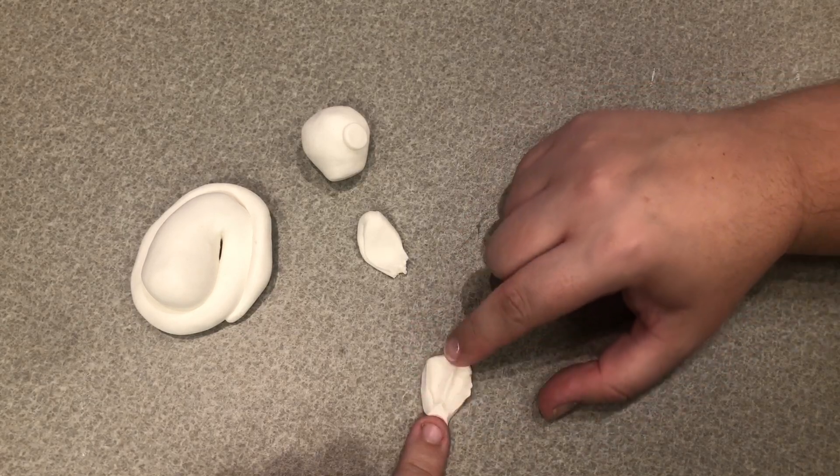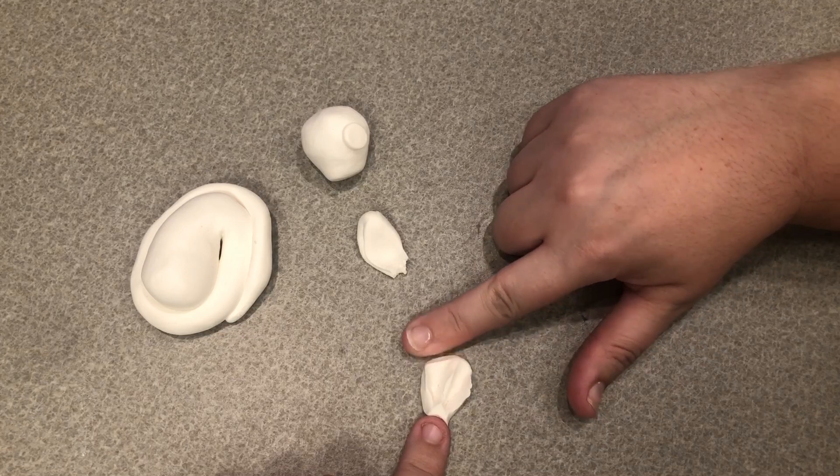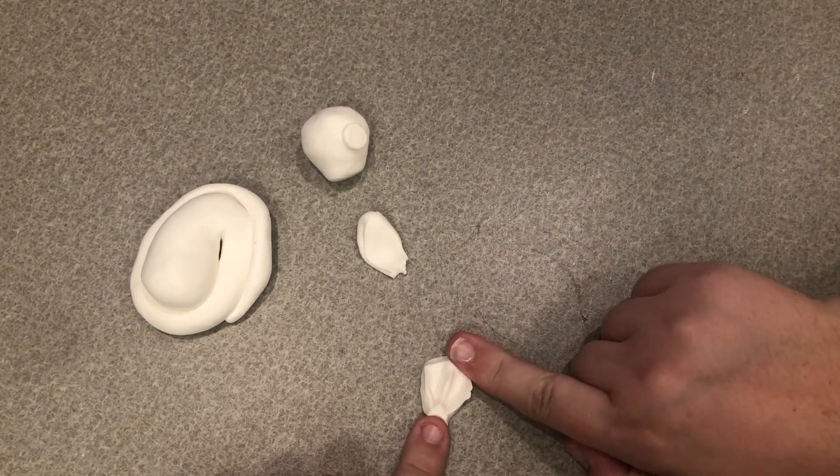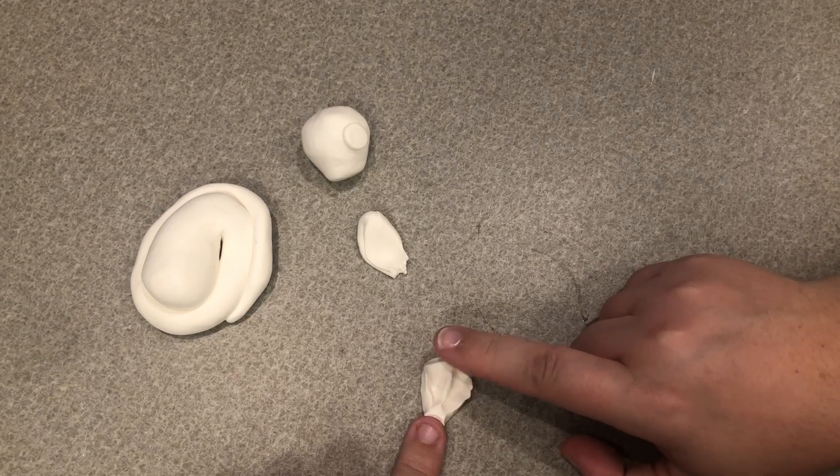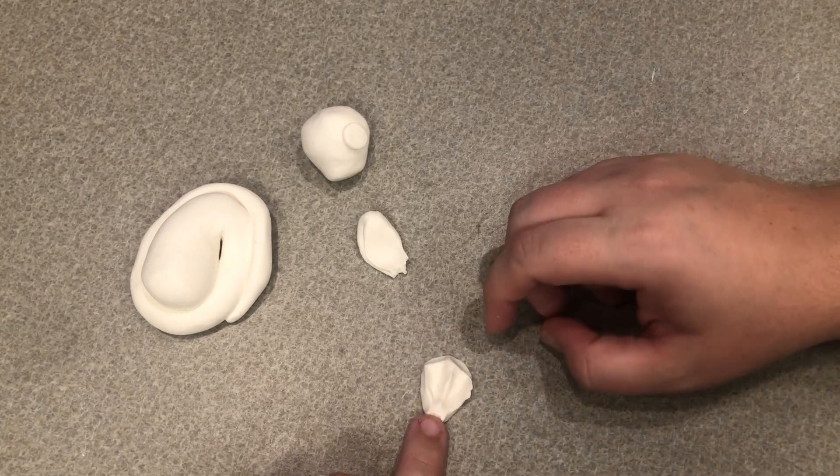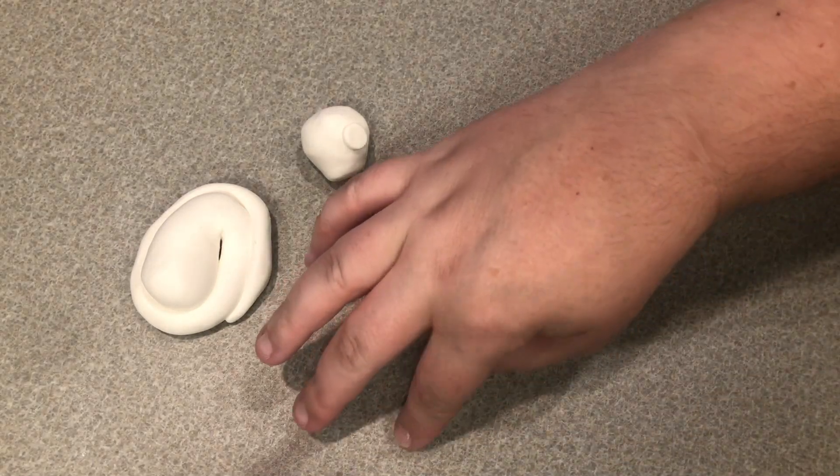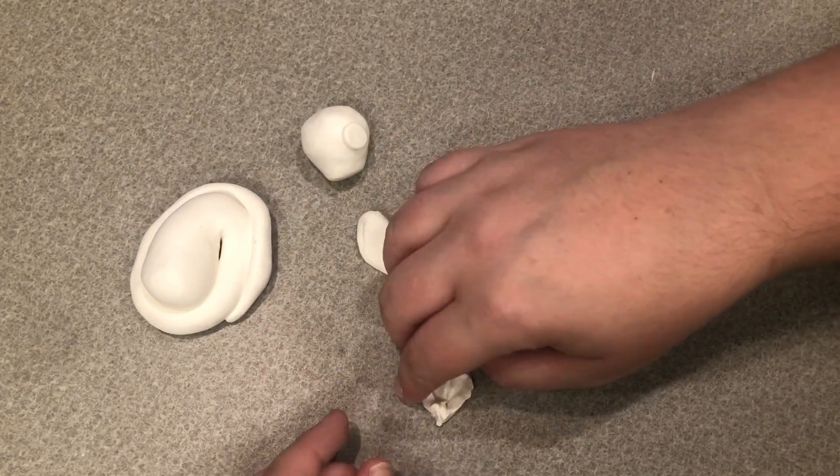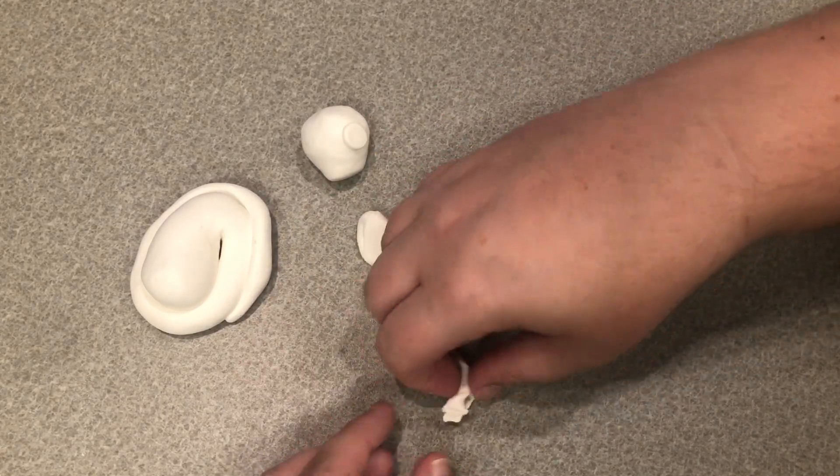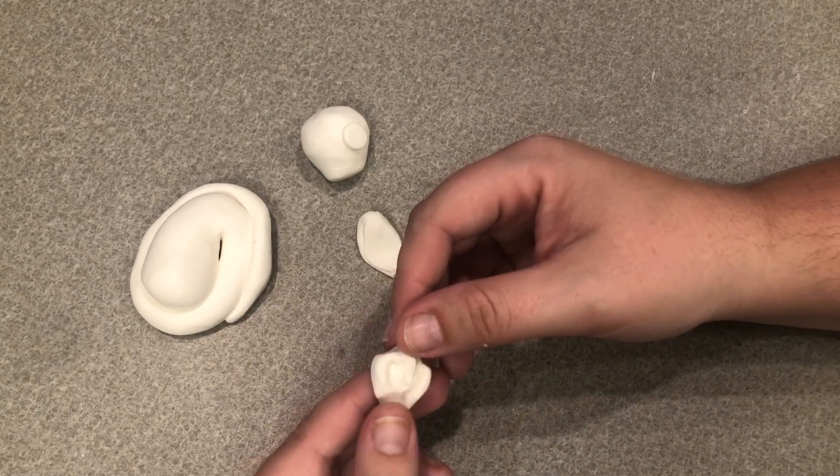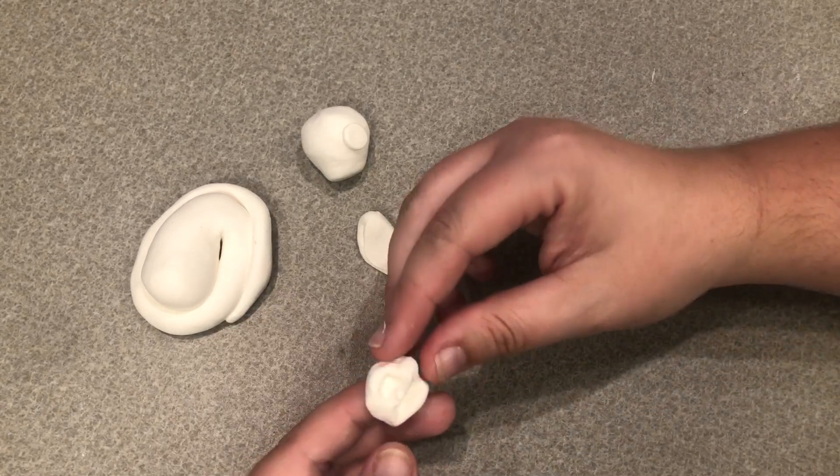Two on the outside and one through the middle and then we just kind of want to make a little V shape for the end of the ear here. Then gently peel it up from the table and we just kind of have to gently pick it up off the table.